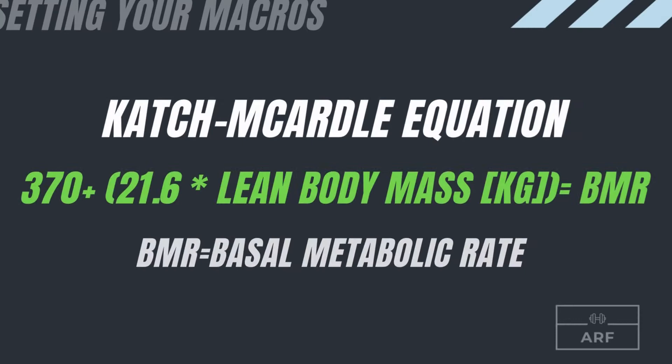The Katch-McArdle equation is: 370 plus 21.6 times your lean body mass in kilograms. Your lean mass in kilograms is your weight in kilos times one minus your body fat percentage. You might not know your body fat percentage — there are a lot of tools out there like DEXA scans, calipers, InBody machines, or bioelectric impedance scales that claim to measure it.